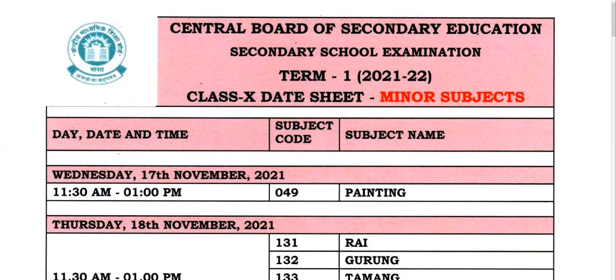Class 10, CBSE Gujarati — second language is Gujarati, right? As a minor subject, the date sheet has come. You have to be aware that the CBSE date sheet has come.